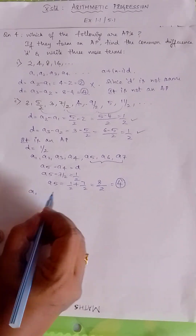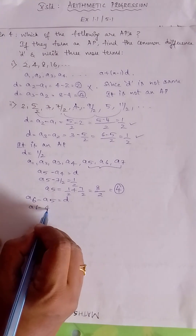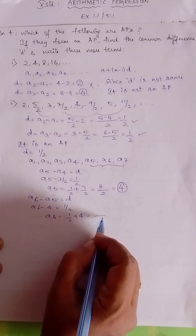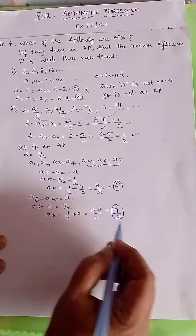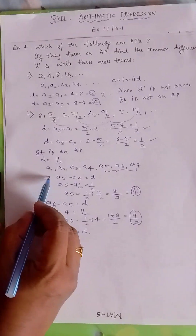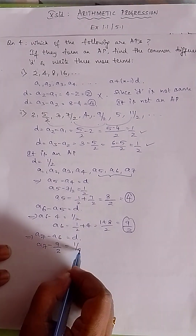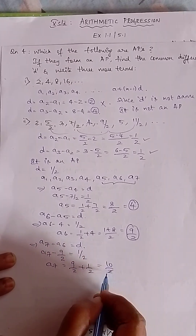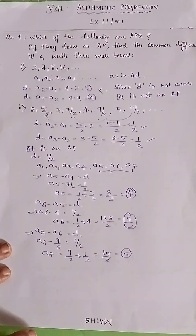Next term: A6 minus A5 = D, so A6 minus 4 = 1/2. Therefore A6 = 1/2 plus 4 = 9/2. Next term: A7 minus A6 = D. A6 is 9/2 and D is 1/2, so A7 = 9/2 plus 1/2 = 10/2 = 5. So we have found the three next terms. This is the second problem.